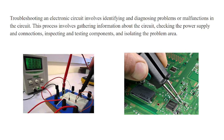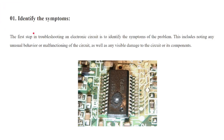Many steps are involved in troubleshooting. The first step is to identify the symptoms. You have to take the circuit and identify the component that is creating the problem. For example, if your IC is not working, check all the components — whichever component is creating the issue, you have to identify it. The first step in troubleshooting an electronic circuit is to identify the symptoms of the problem, noting any unusual behavior or malfunctioning, as well as any visible damage to the circuit or its components. For instance, if you can see the IC is damaged, you can replace it.